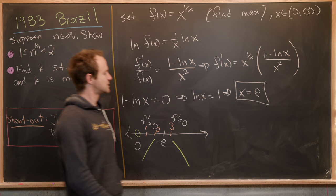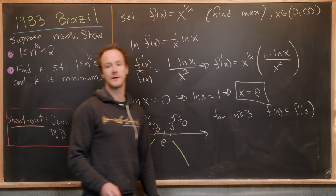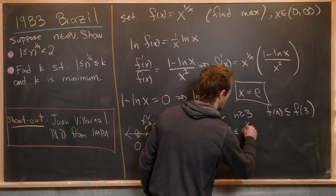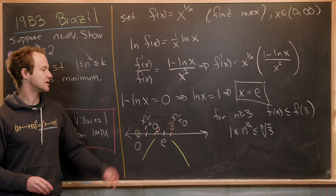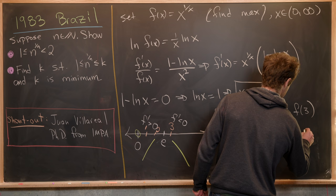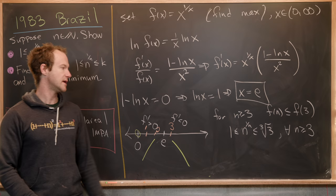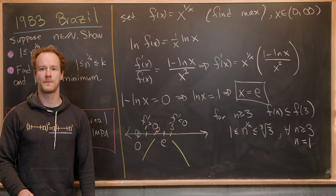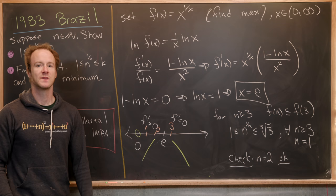Since the function is decreasing to the right of e (which is between 2 and 3), for any n ≥ 3 we have f(n) ≤ f(3). So for n ≥ 3: 1 ≤ n^(1/n) ≤ 3^(1/3), i.e., the cube root of 3. For n = 1: 1^(1/1) = 1, so n = 1 is also fine. We still need to check n = 2 on the next board.